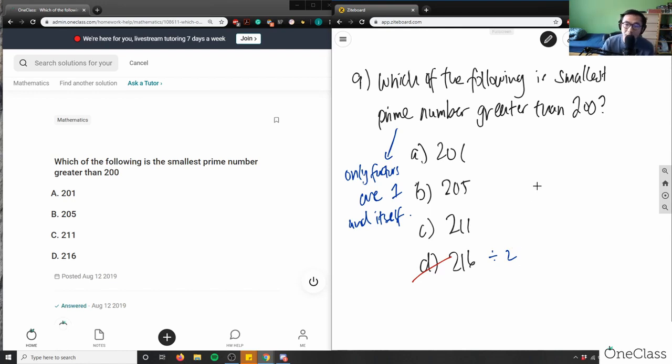I can see that B here is an incorrect answer as well because it ends in 5, which means I can obviously divide 205 by 5. This here is also an incorrect answer.